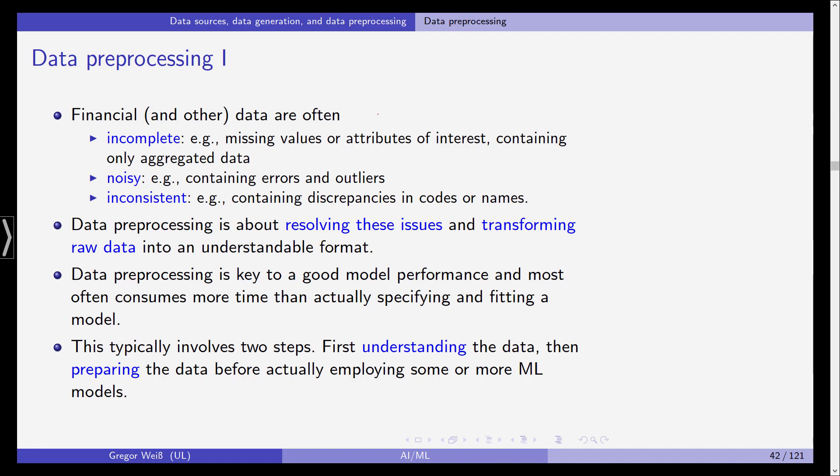Data preprocessing is key to good model performance. If you have errors in your data or incomplete data, you might not be able to perform your analysis in the first place. Your algorithm might just stop. But that's actually the good case. The worst case is that your algorithm works on the data and you don't see what the errors produce. You only get an output that is biased by results you haven't identified beforehand.